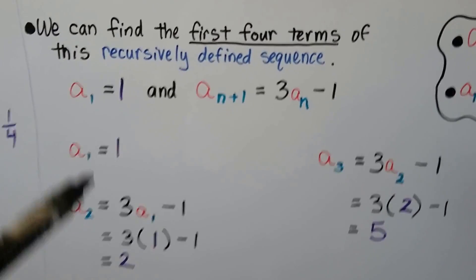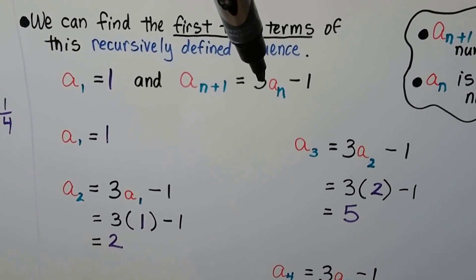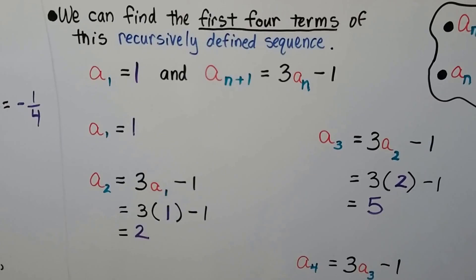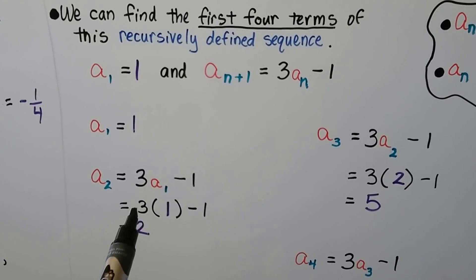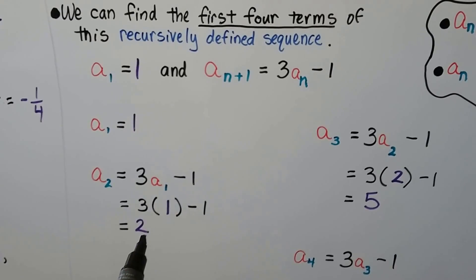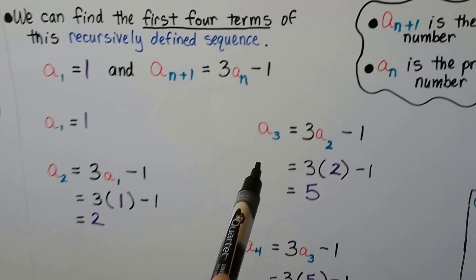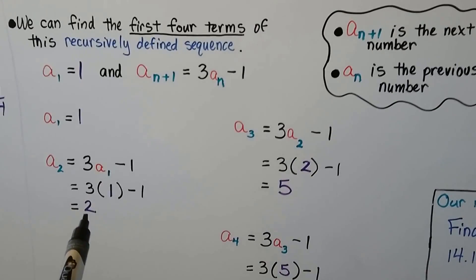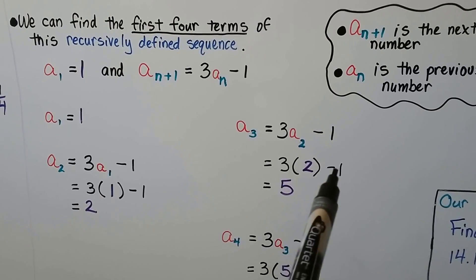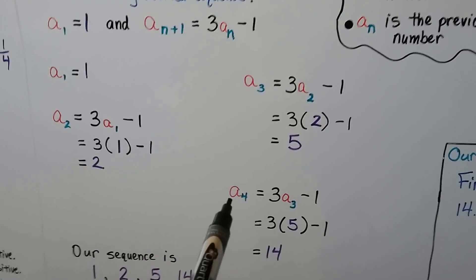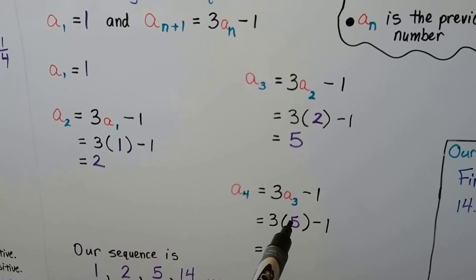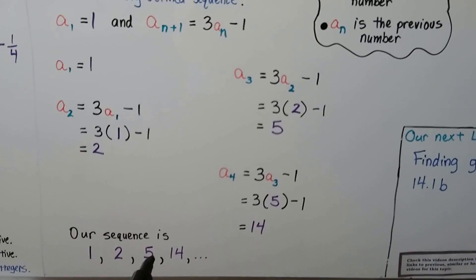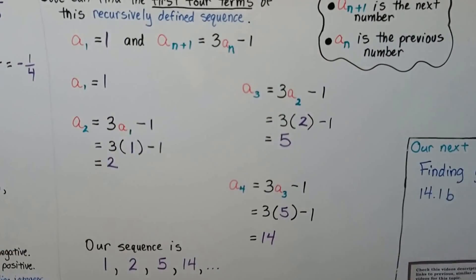We know a sub 1 is equal to 1, so we've got that. That's the first term. The second one, a sub 2, is going to be 3 times a, and we're going to put a 1 here, because that's what we're dealing with, minus 1. So, that means we're going to do 3 times 1, minus 1. That's going to give us a 2. For the third term, a sub 3, we're going to do 3, and there's going to be a 2 here, because that n is the previous number, the 2. That's going to give us a 6 minus 1, a 5. For the fourth term, we're going to put the previous number, 5, there. And we're going to subtract 1. That's going to give us 15 minus 1. That's going to give us 14. So, our sequence is 1, 2, 5, and 14 if we follow this rule.